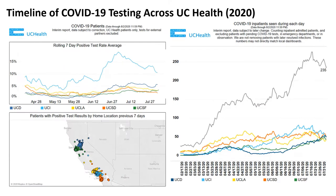Across UC, we exponentially increased testing capacity. You can see the circles showing the density of testing coverage, with Southern California experiencing more testing due to its higher population density.